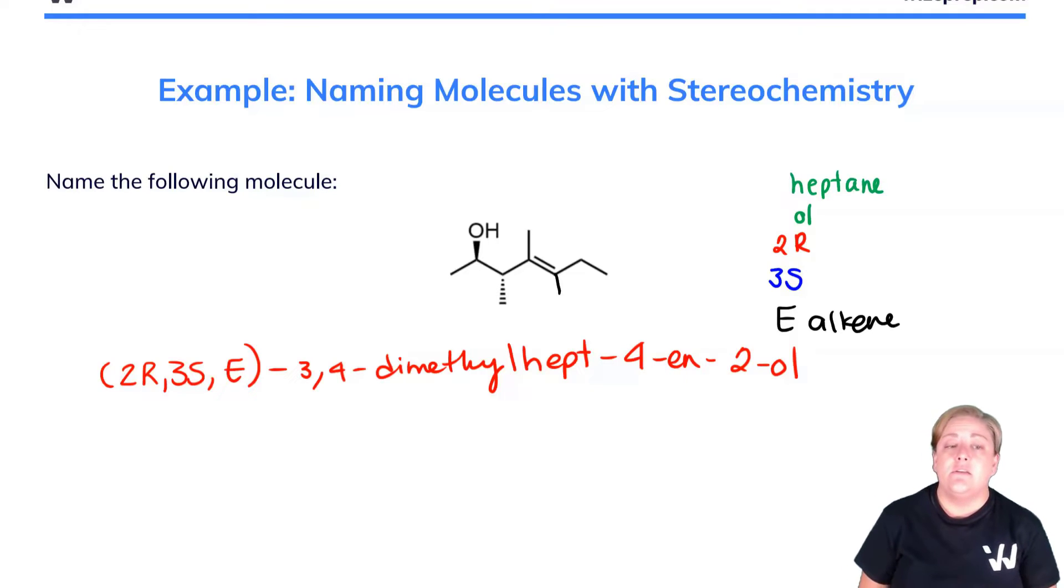(2R,3S,E)-3,4-dimethylhept-4-en-2-ol. Indicates the alcohol at the two position, the alkene at the four, the hept for the seven-carbon chain, the 3,4-dimethyl for where those methyls are located, and the stereochemistry all the way at the front. Take a really methodical approach to these really tough questions and you should be fine.